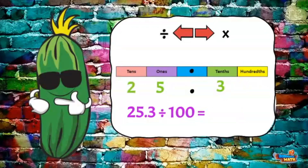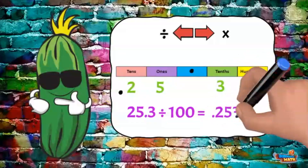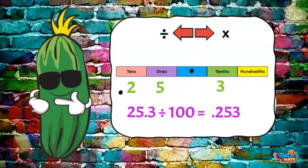Now let's try dividing. The problem reads 25 and 3 tenths divided by 100. The decimal will move two places to the left for a value of 253 thousandths.